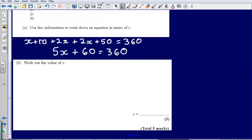Part B then asks us to work out the value of x. So basically it's asking us to solve the equation that we've just formed. So we started with 5x plus 60 is equal to 360.